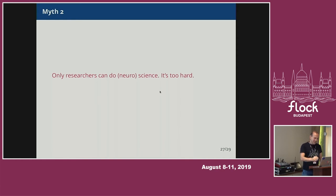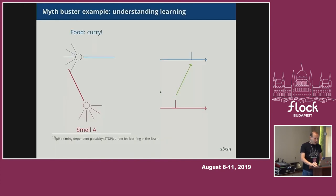Myth two: only researchers can do neuroscience — it's too hard. Absolutely not. But it just requires that same discipline. So if you're familiar with good practices, best practices in software engineering, then in many ways you're ready to do science. He's got a little spike time-dependent plasticity example here.